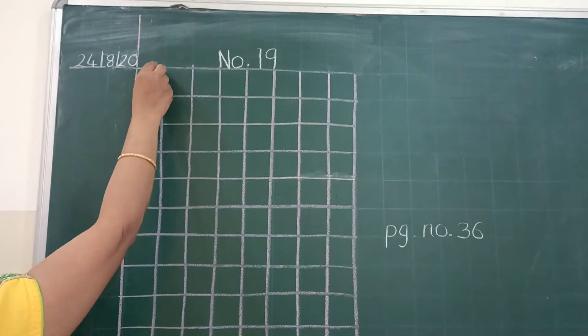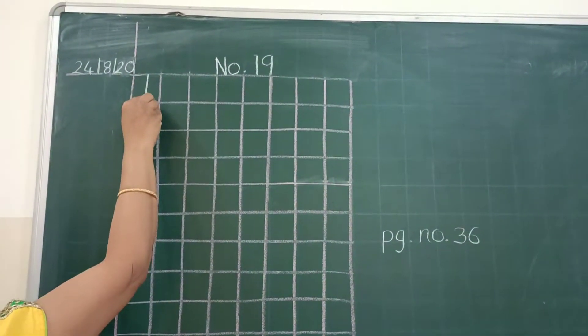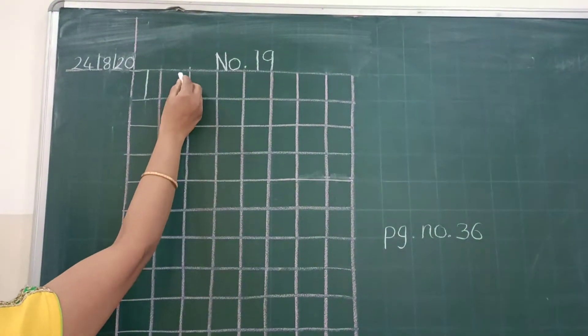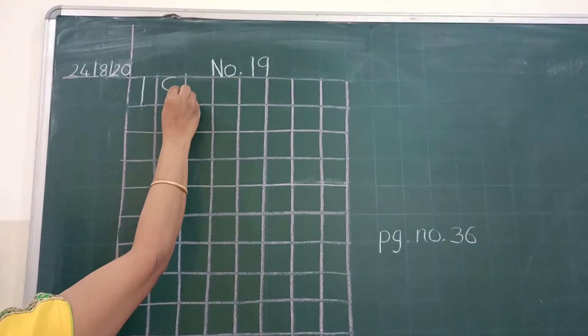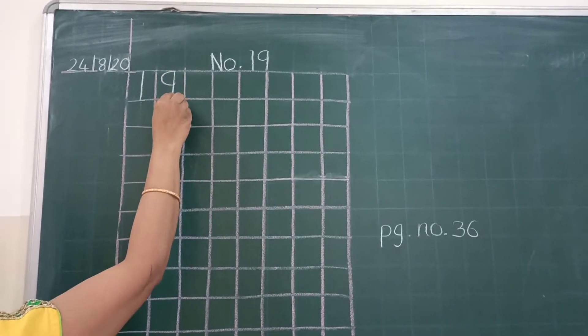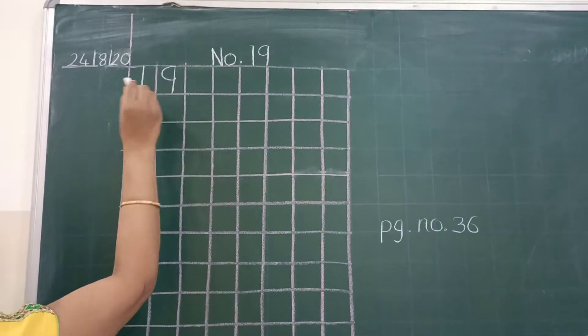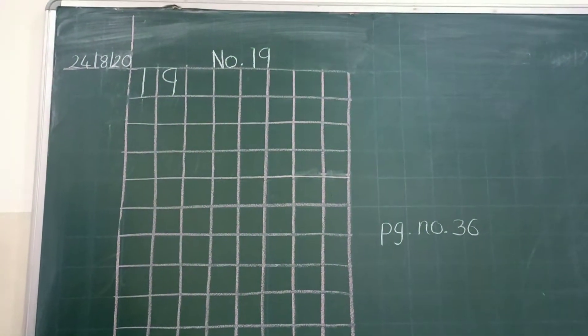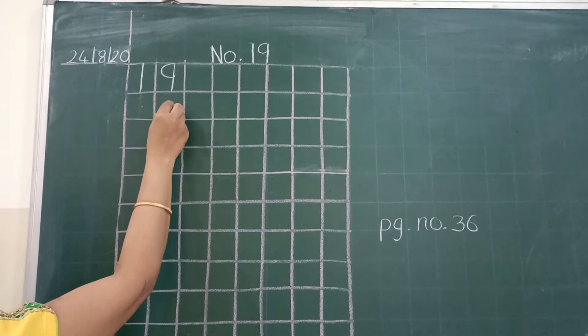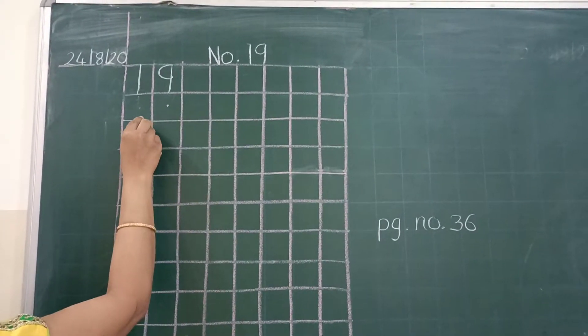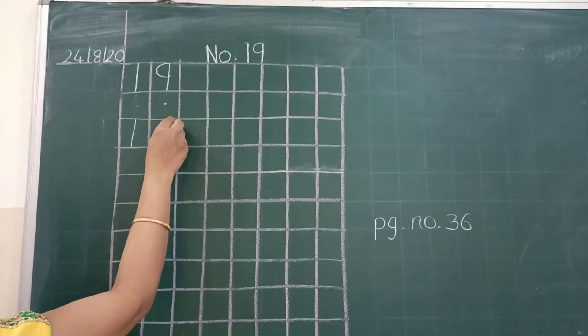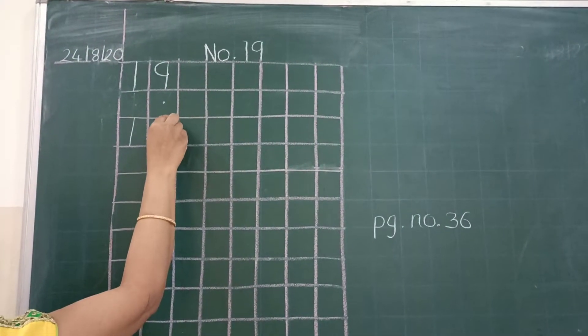In your first box you have to write number 1, and in the next you have to write number 9. So 1, 9, 19. Then leave 2 boxes and write here 1 and 9, 19.